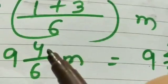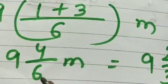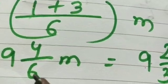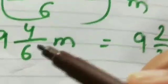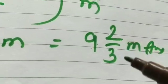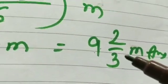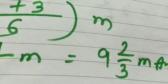So now again, 4 and 6 comes in the table of 2. So we will convert this fraction 4/6 into a simple fraction. So that will be 2/3. So the answer will be 9 2/3.